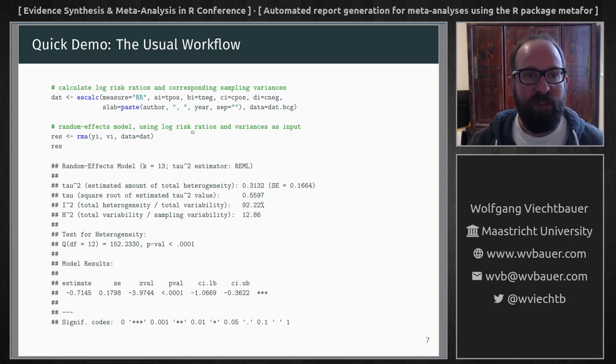And then we can use these log risk ratios and variances as input to the rma function which is one of the main model fitting functions and by default it will fit a random effects model and then we can look at the output.